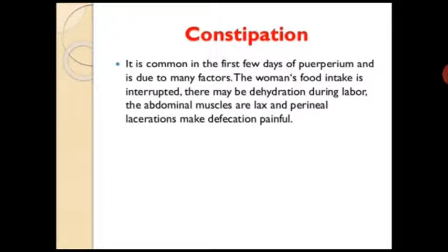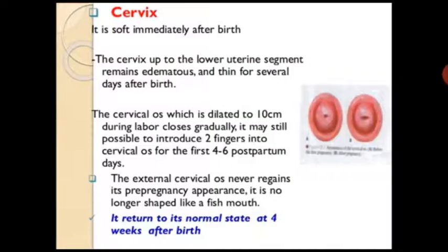In primigravida, the uterus remains tonically contracted unless clots or tissue remain in the uterus. In multipara, the uterus contracts and relaxes at intervals, causing after pains. Constipation is common in the first few days of puerperium and is due to many factors: food intake may be interrupted, there may be dehydration during labor, the abdominal muscles are relaxed, and perineal laceration makes defecation painful.